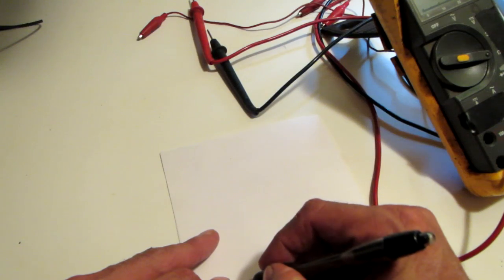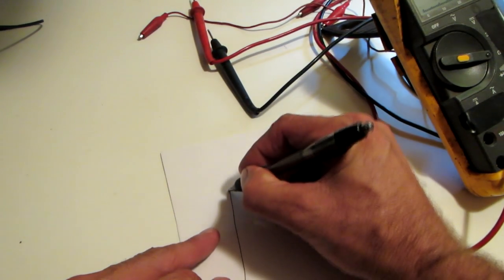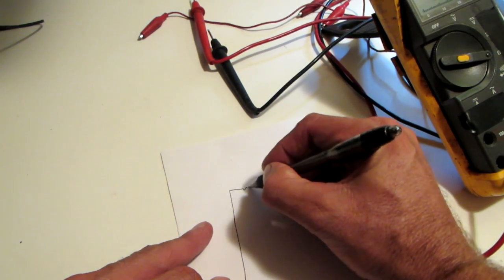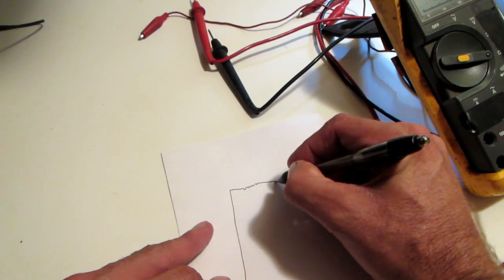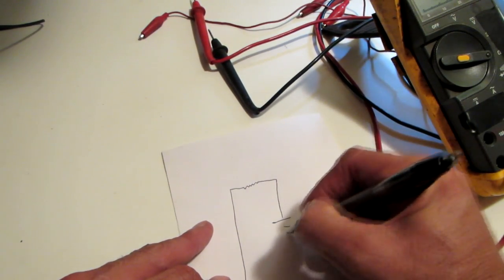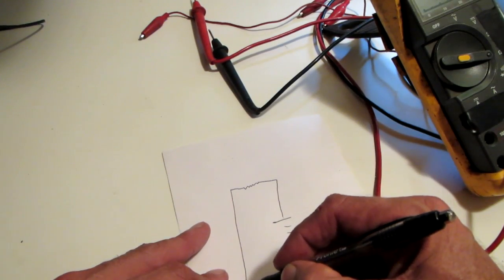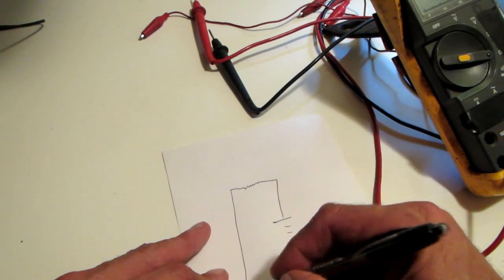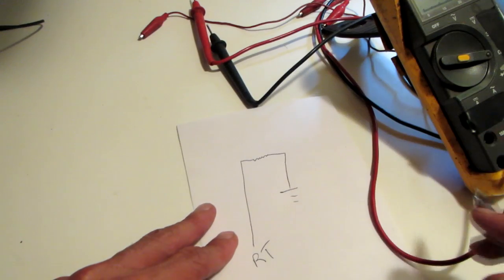Basically how it works is a simple schematic. That would be your 12 volt coming in from your turn signal or your brake light.